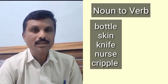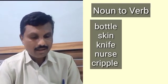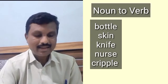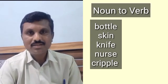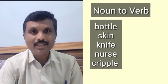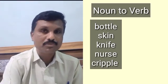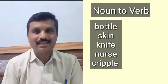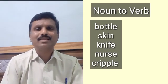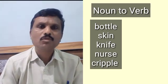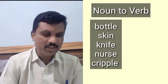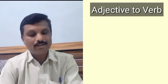See the examples: bottle, karma, skin, knife, nurse, cripple, mail. These were initially nouns but are now being used as verbs. For instance, 'I mailed him a letter.' So these are now being used as verbs — initially they were nouns, but are now used as verbs. This is the conversion of nouns into verbs.